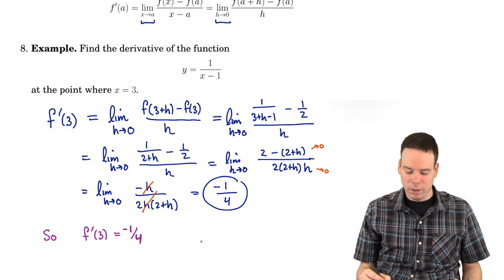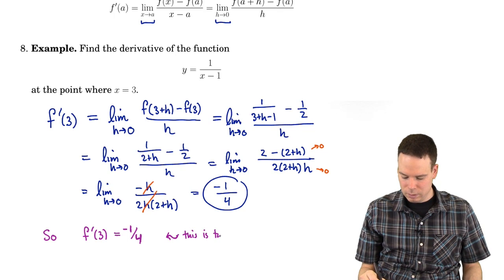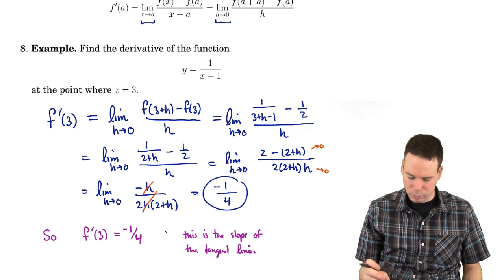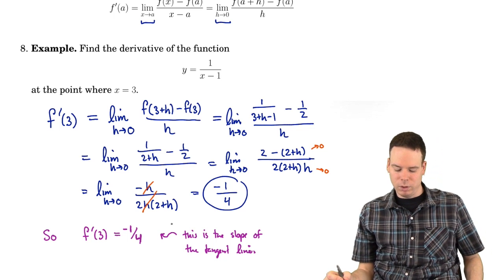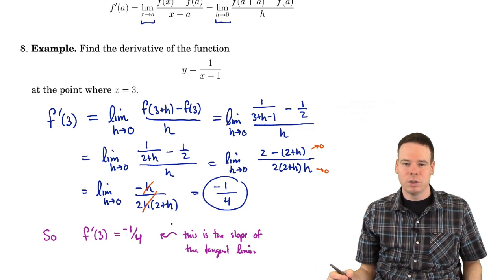Recall what our interpretation is: the derivative is the slope of the tangent line. So f prime of 3 = −1/4 is the slope of the tangent line, also known as the derivative.